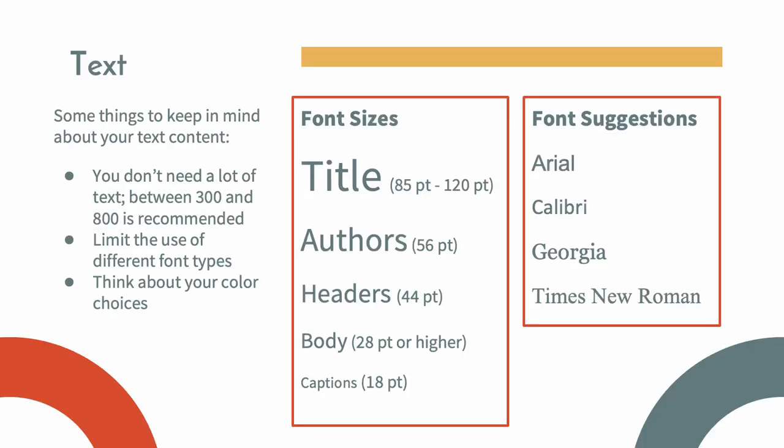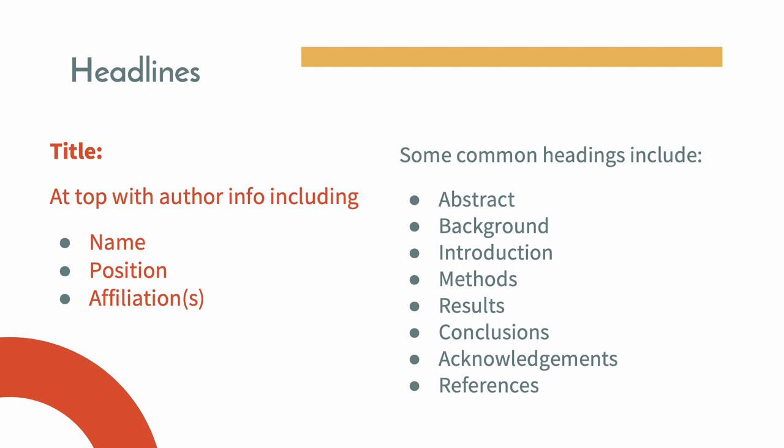Avoid the temptation to cover your poster with text — less is more. Use a readable font like Arial, and follow the font size guidelines on this slide for various pieces of your poster, like the title, headers, and body text. Headlines can help direct the viewer to key portions of your poster and can serve as a visual roadmap. You may start with the abstract and background at the top left of your poster, and place the conclusions and references at the bottom right.